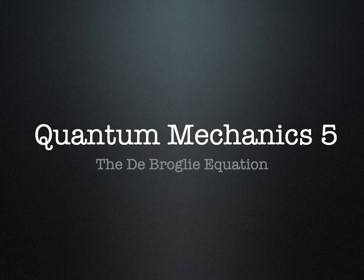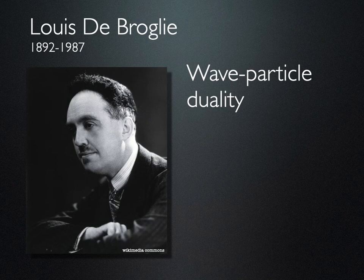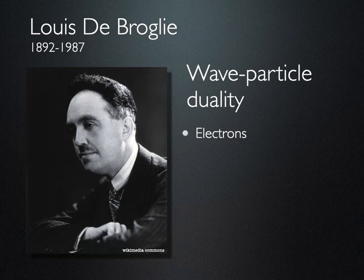In this video we're going to look at the de Broglie equation. The de Broglie equation comes to us from Louis de Broglie, a French physicist who was investigating wave-particle duality. We already know from the double slit experiment that electrons exhibit wave-particle duality.